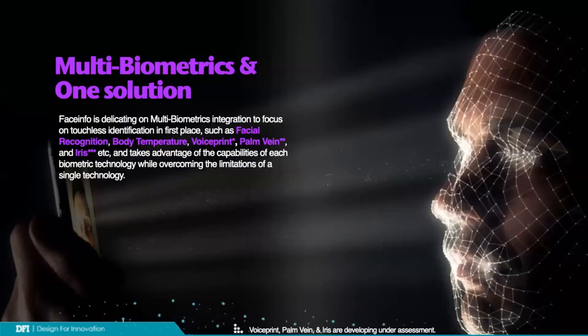Not only one biometric — we also provide multi-biometric. For example, we have facial recognition plus body temperature, and also fingerprint. This lets you control access to your computer room, financial room, or even your inventory room, to make sure only a person with permission can enter your areas.